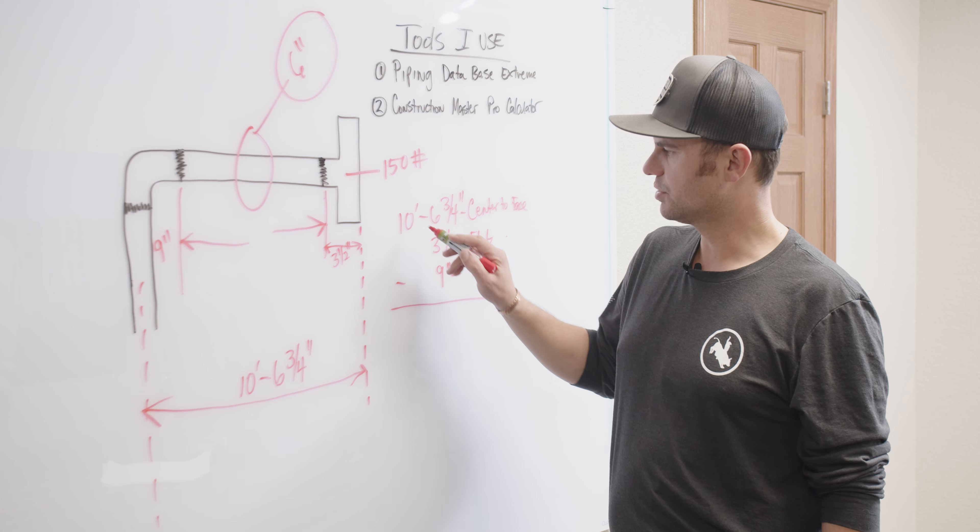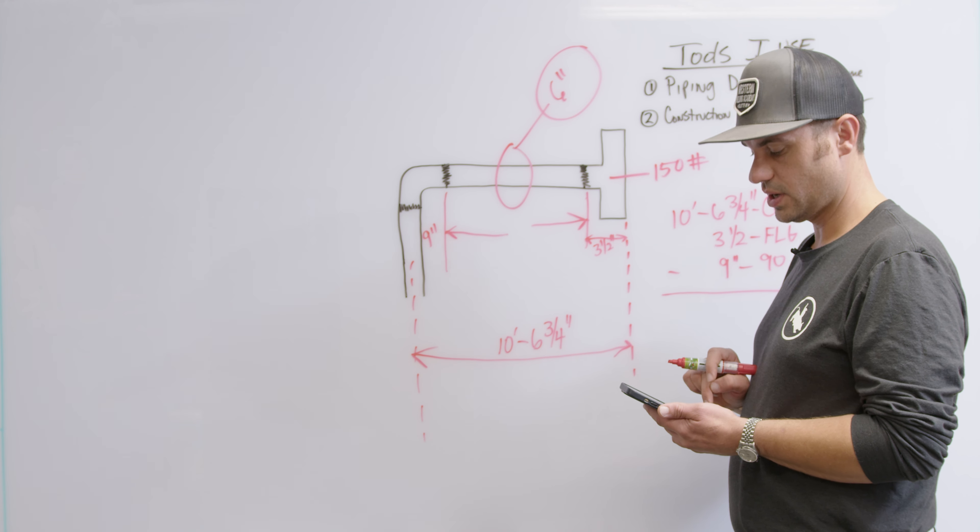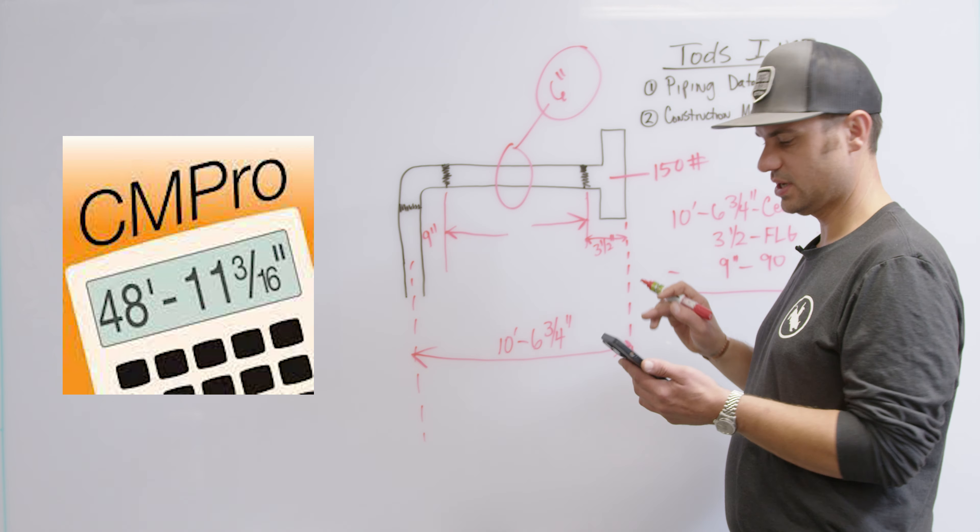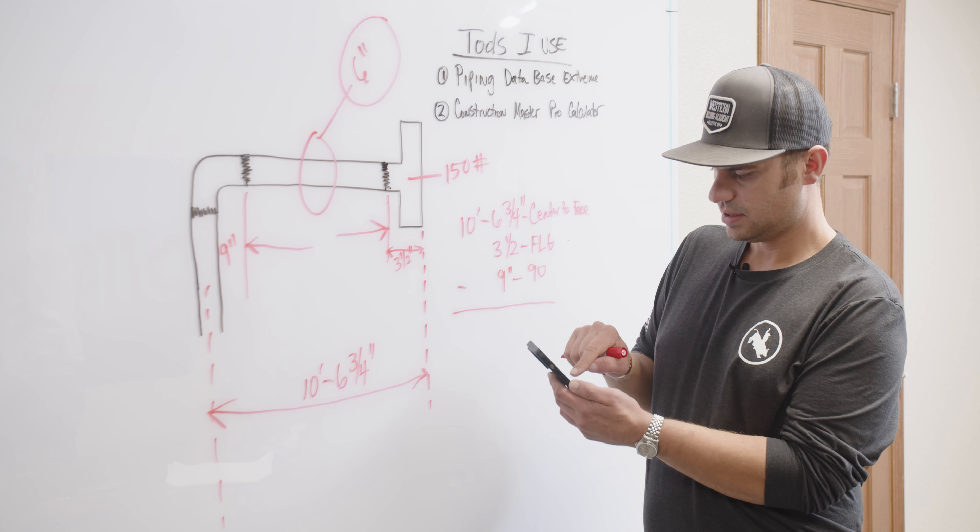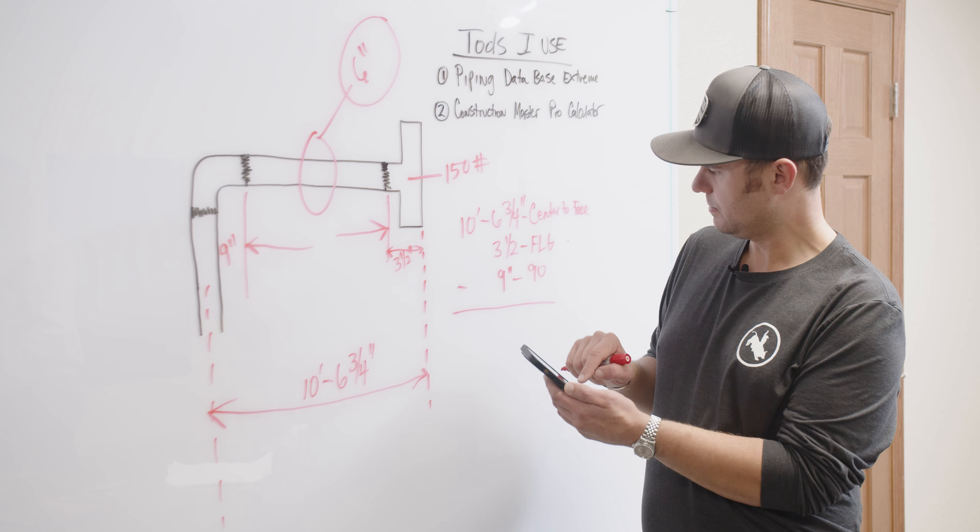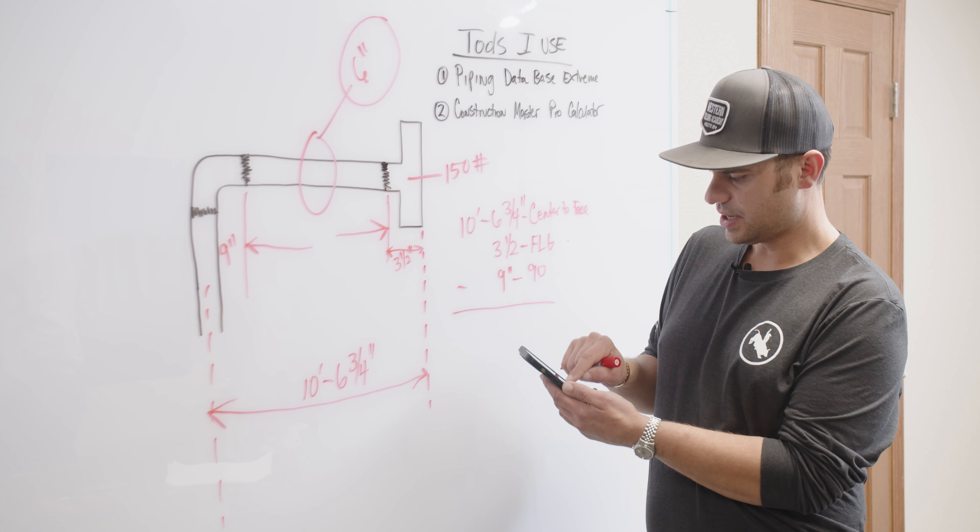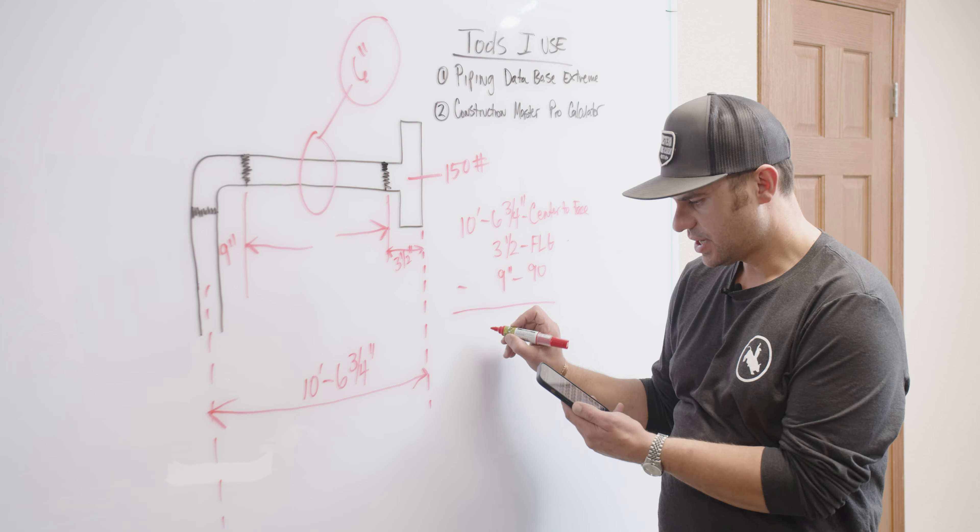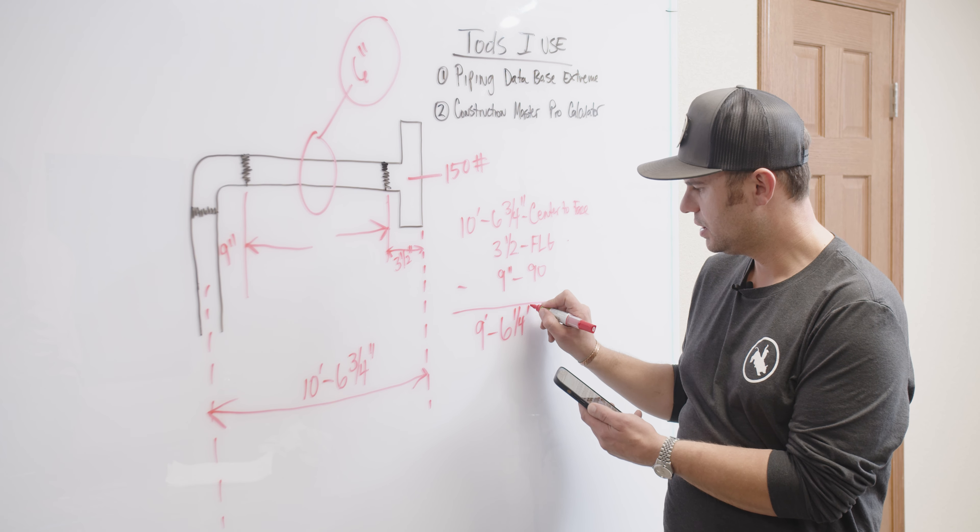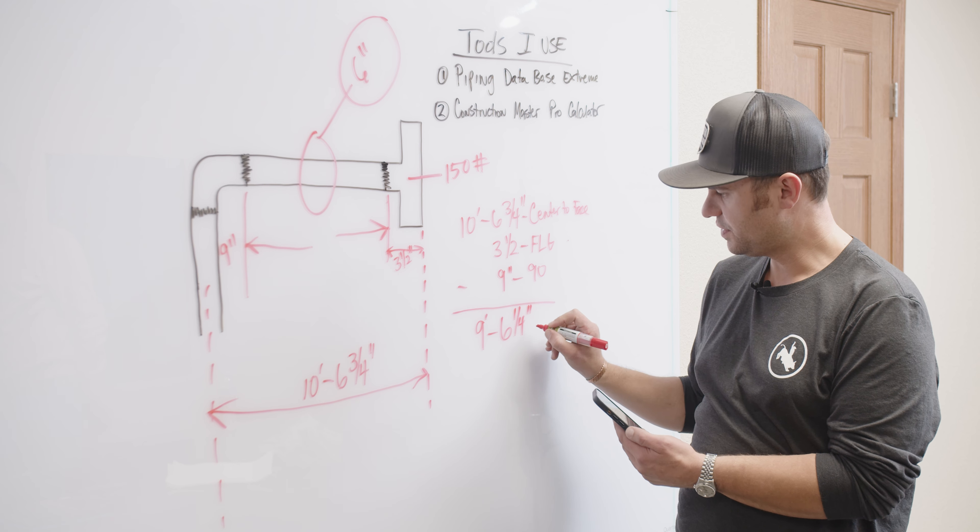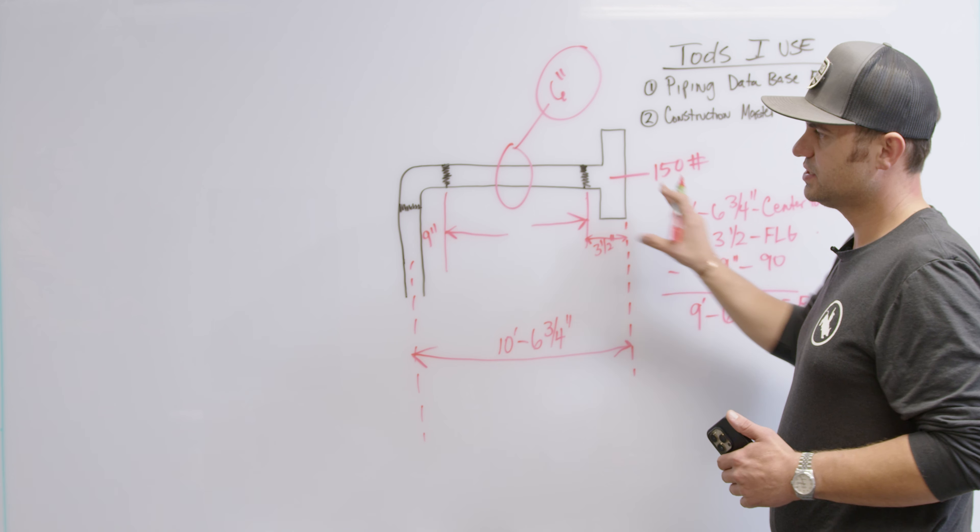Sometimes I just do C-F. The next thing we need to do is take out for our flange and label it. Old pipe fitter trick, I just do F-L-G because I know it stands for flange. Next thing we need to do is take off for our 90. So we're going to take 10 foot 6 and 3 quarter. For you folks out there that are not real slick on the math, this is where the construction master pro calculator really comes in handy.